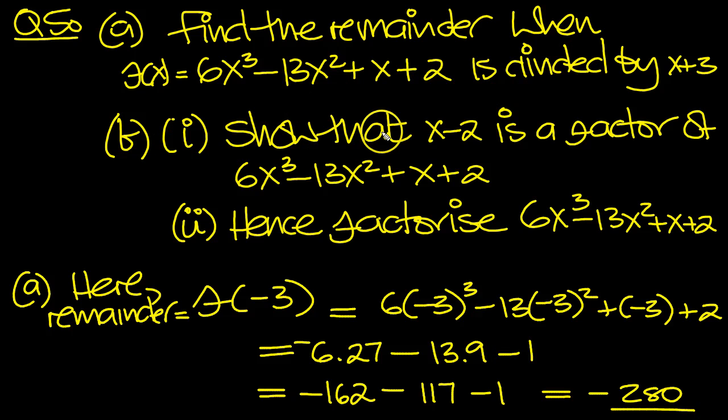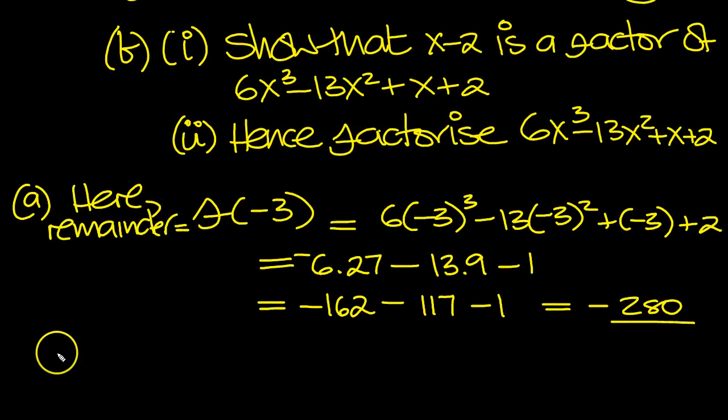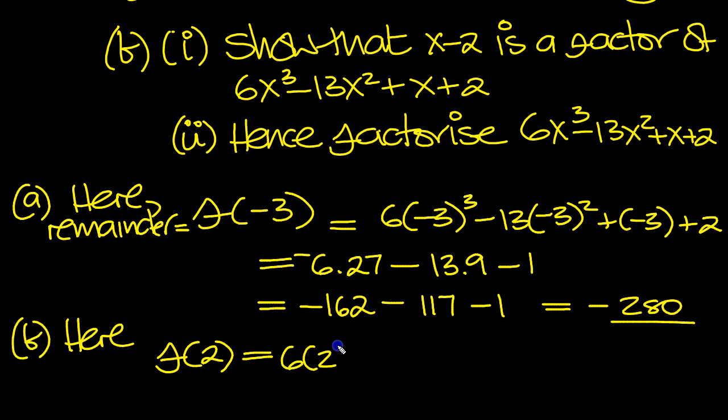Okay, so part B then, show that this is a factor. Part B. Here, f of 2 then we need to put in, don't we? Which is equal to 6 times 2 cubed, minus 13 times 2 squared, plus 2, plus another 2.